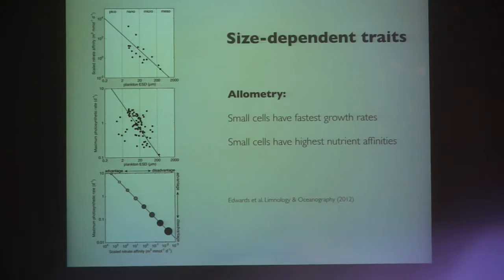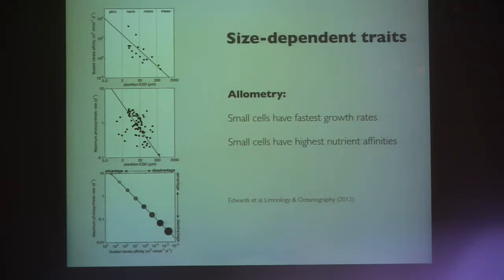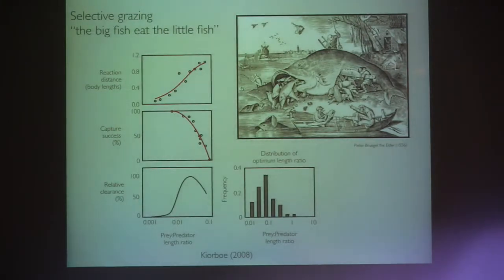Plotting affinity against maximum growth rate, with different size classes of phytoplankton: the big ones are in the corner with low affinities and slow growth rates, and the small ones are in the corner with high affinities and high growth rates. So it's really much better to be small in every way in this setup. So why are there any big cells? This is the role of the zooplankton.